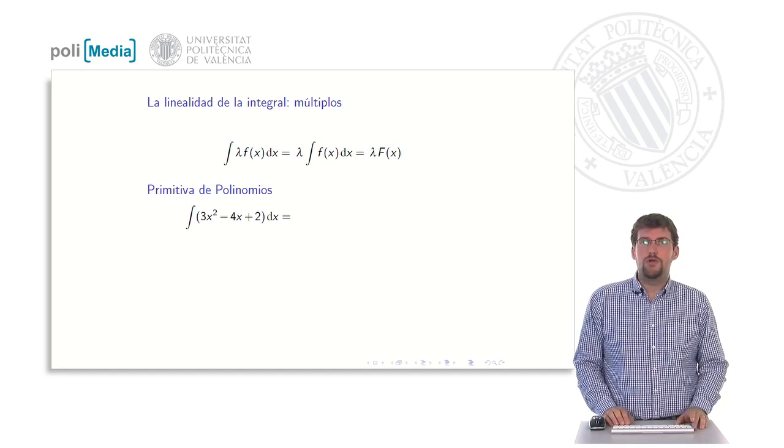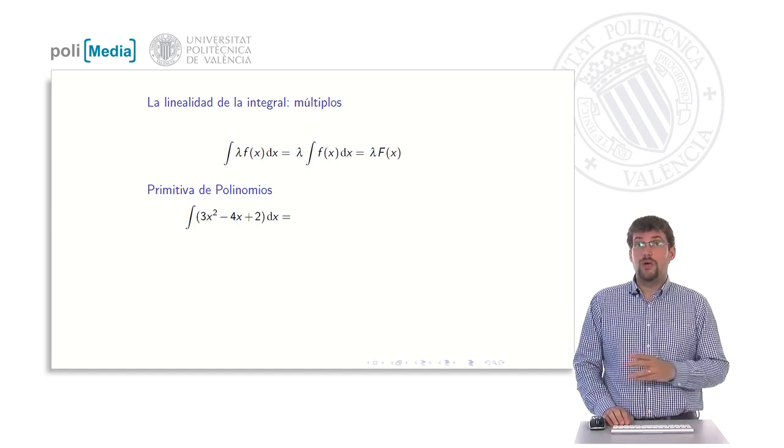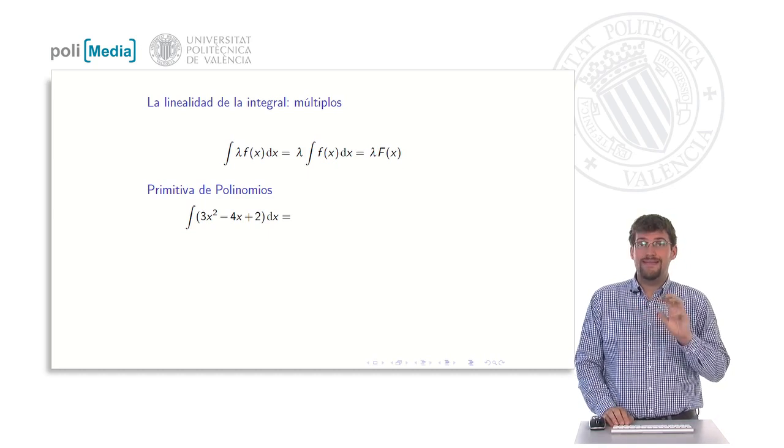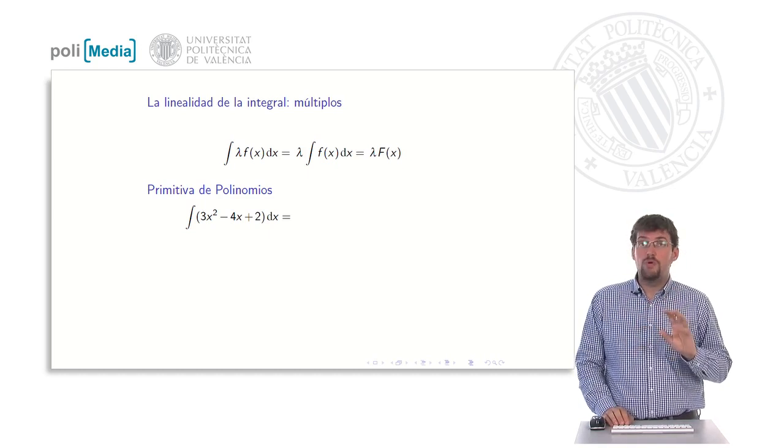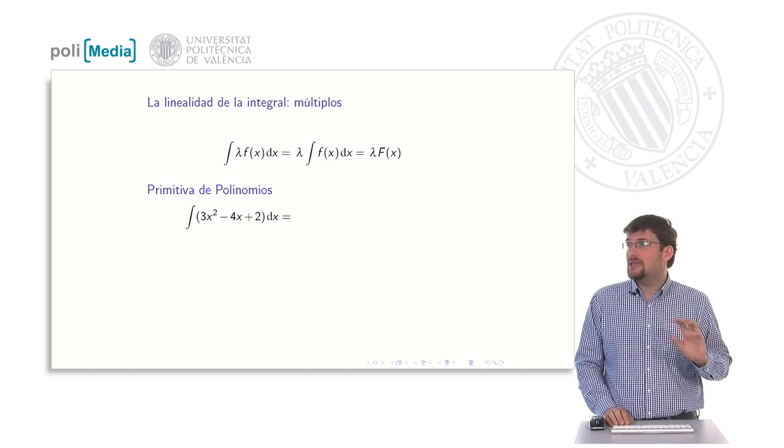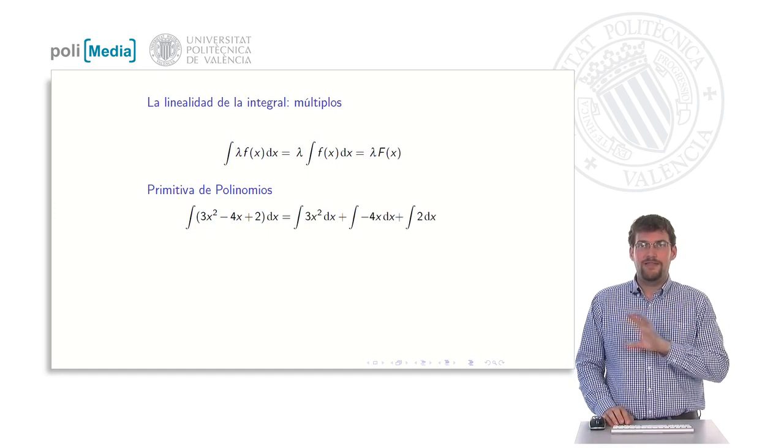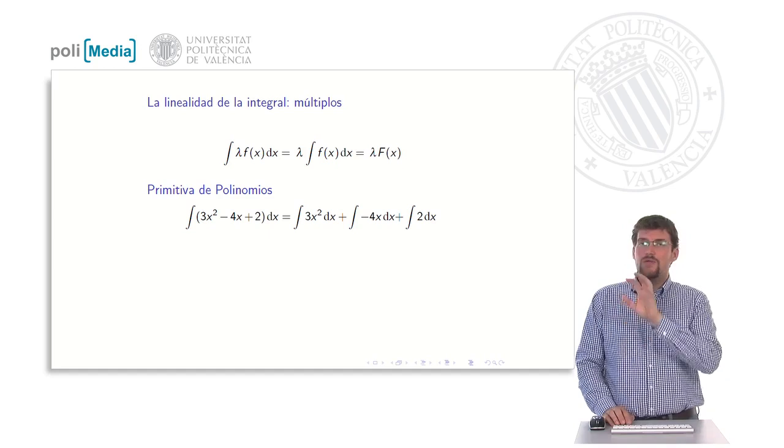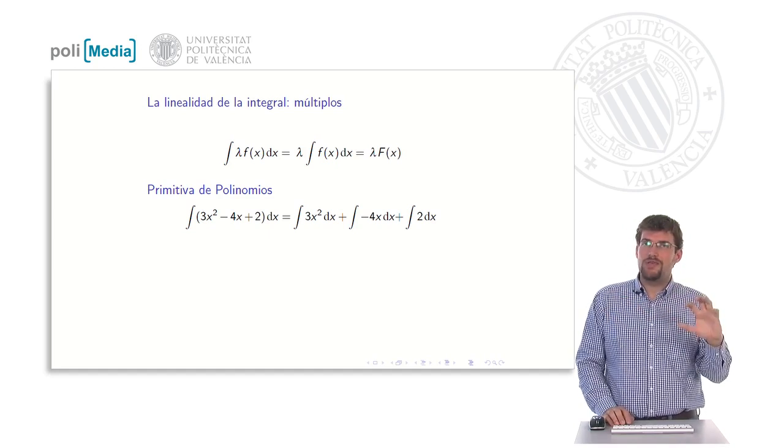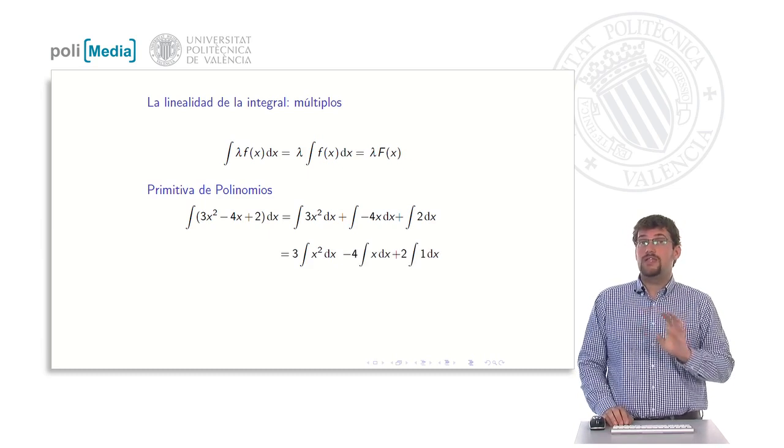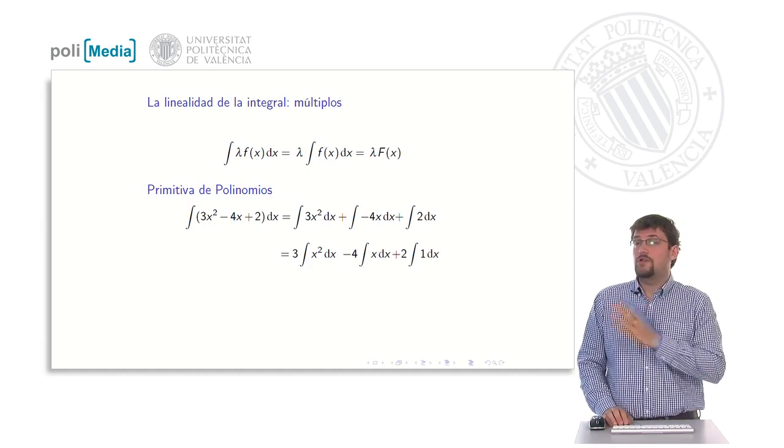How do we calculate the primitive of a polynomial like the one here? 3x squared minus 4x plus 2. As we see, this is a combination of three addends. The first thing we can do by applying the linearity is to separate the three different numbers. The first integral, the second integral, and the third one. And now, on each one of those integrals, the numbers can come out. In the first one, the 3 comes out. In the next one, the 4 comes out. And in the last one, the 2 is the one that comes out.